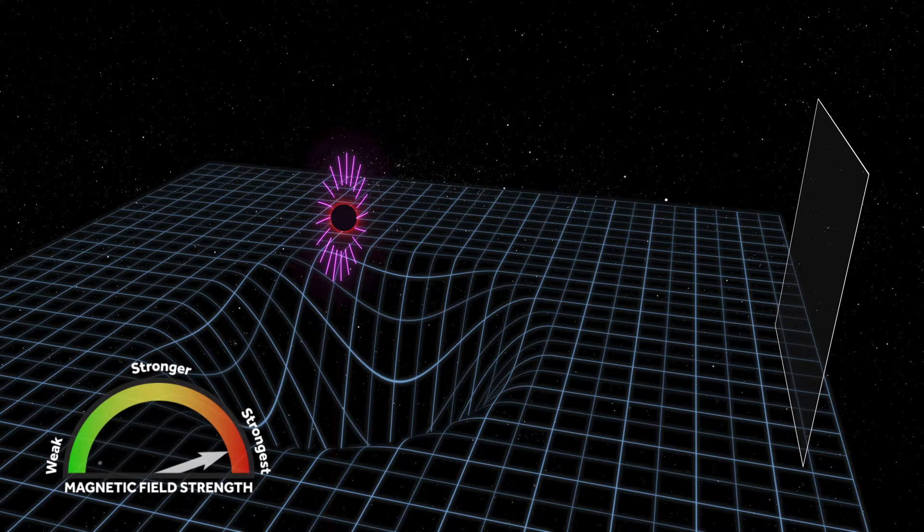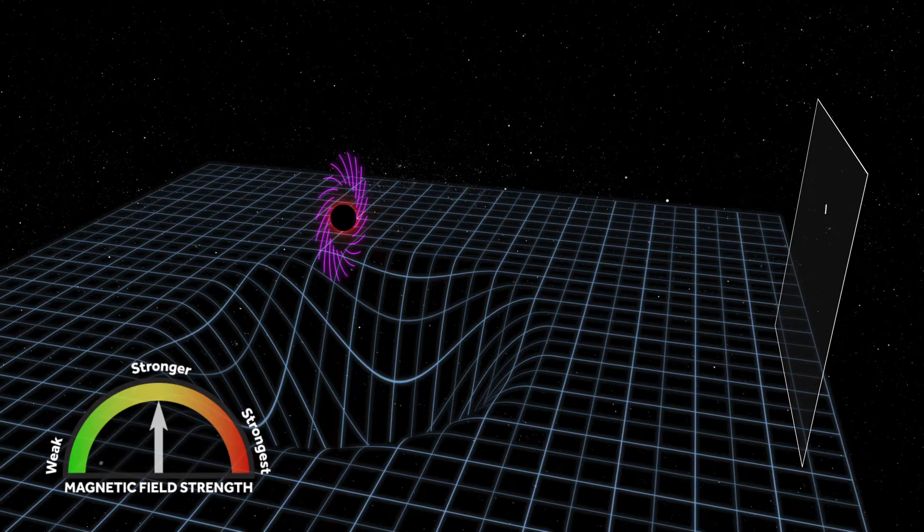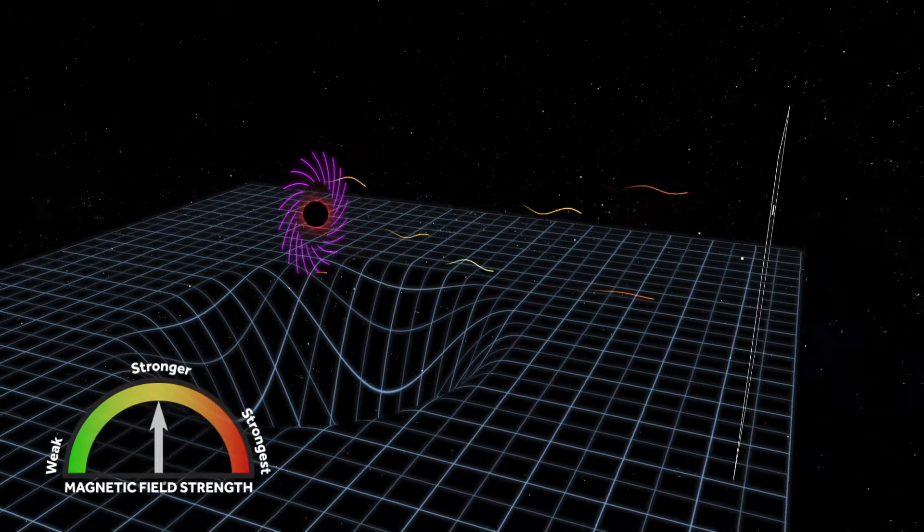Finally, if the magnetic field strength falls somewhere in between these extremes, it generates a spiraling pattern.